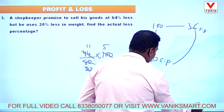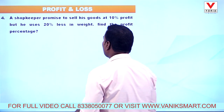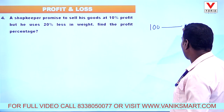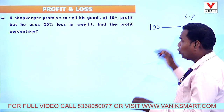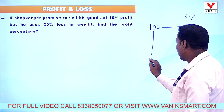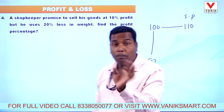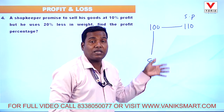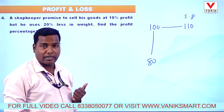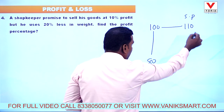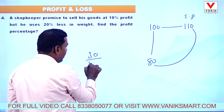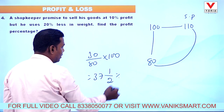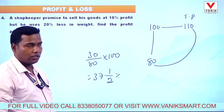Question 4: A shopkeeper promises to sell his goods at 10 percentage profit. Cost price 100, selling price 110. But he uses 20 percentage less in weight — new cost price is 80 (for 800 grams). He gives 800 grams worth of goods (cost 80 rupees) and collects 110 rupees as selling price. Profit = 30 rupees. Profit percentage = 30/80 × 100 = 37 and 1/2 percentage.